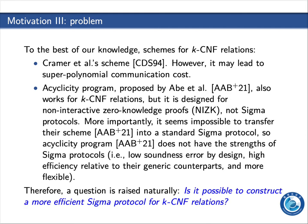To the best of our knowledge, we find the following schemes working for K-CNF relations. The first one is CDS-94; however, it may lead to superpolynomial communication costs. The second one is a circuit program proposed by Abel et al., but it is designed for non-interactive zero-knowledge proofs, not a sigma protocol. More importantly, it seems impossible to transfer their scheme into a standard sigma protocol, so the circuit program does not have the strengths of sigma protocols. Therefore, a question arises naturally: is it possible to construct a more efficient sigma protocol for K-CNF relations?